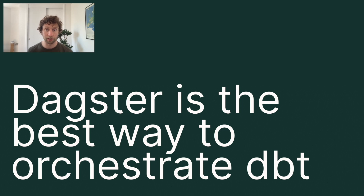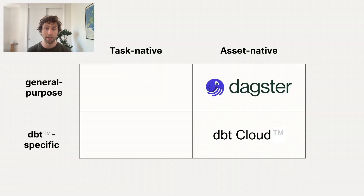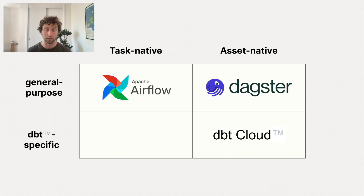This isn't because it has more features than the alternatives, although it has some good features. It's because Dagster's core design principles go really well together with dbt. The similarities between the way that Dagster thinks about data pipelines and the way that dbt thinks about data pipelines means that Dagster can orchestrate dbt much more faithfully than other general purpose orchestrators like Airflow. And at the same time, Dagster is able to compensate for dbt's biggest limitations.